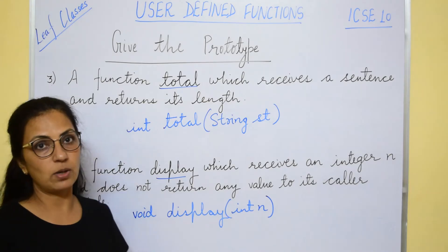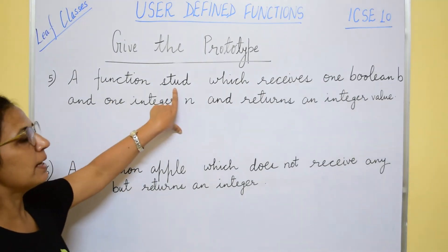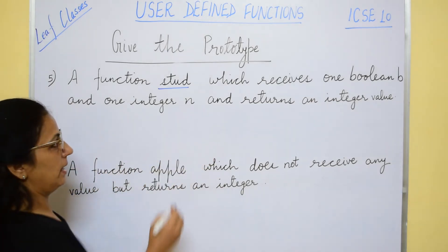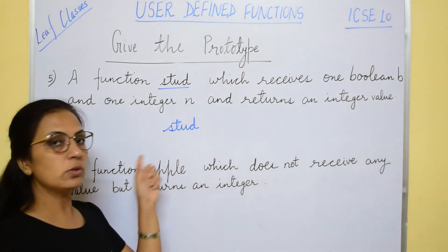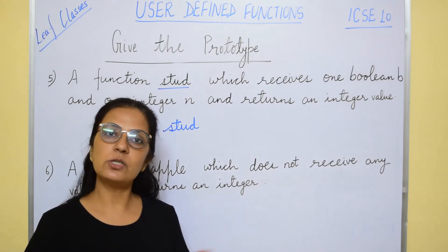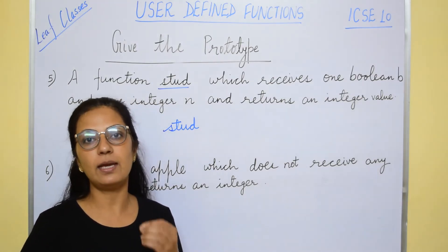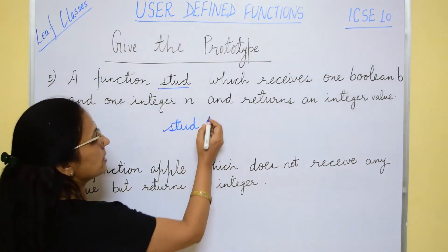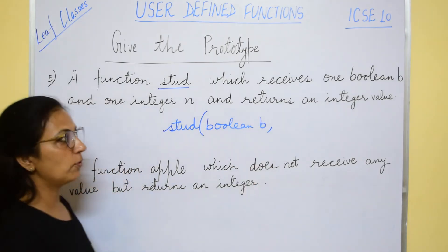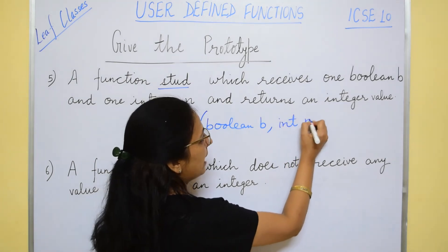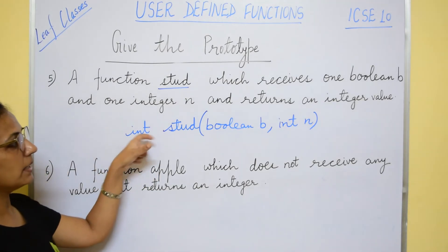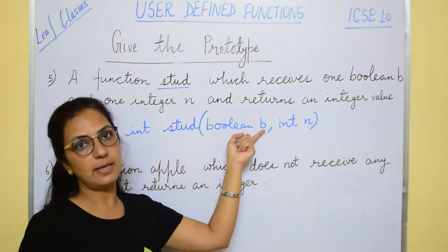The next is to write the prototype for the function stud, which receives one boolean b and one integer n. So the function name is stud. If it is in lowercase, write in lowercase; if it is in uppercase, write in uppercase only. Don't change the case yourself — don't change anything if a variable name is given in the question. It is receiving two arguments: one is boolean b — boolean is the data type and b is the variable — and one integer n, where the data type is int. And it returns an integer value, so the return type is also int. So it is int, then the function name stud, and then the list of arguments along with their data types.